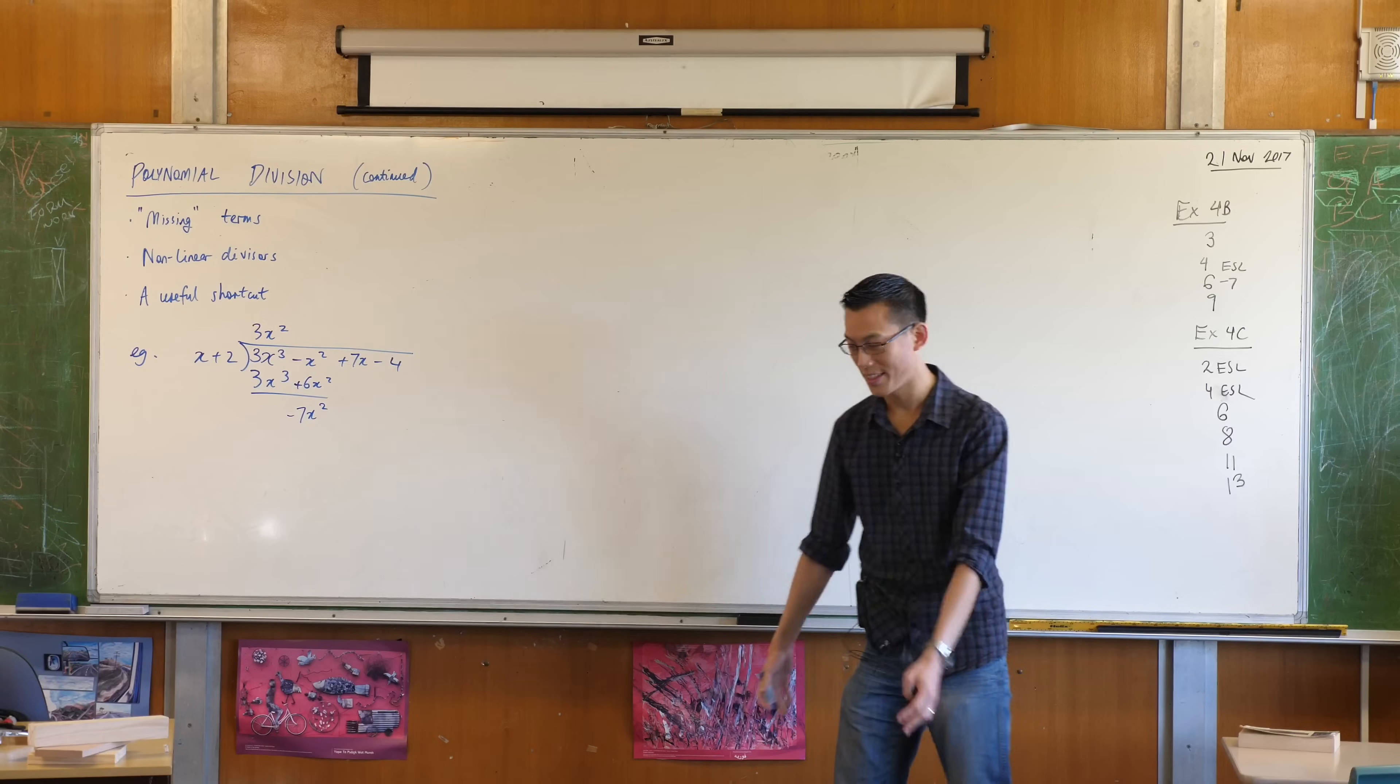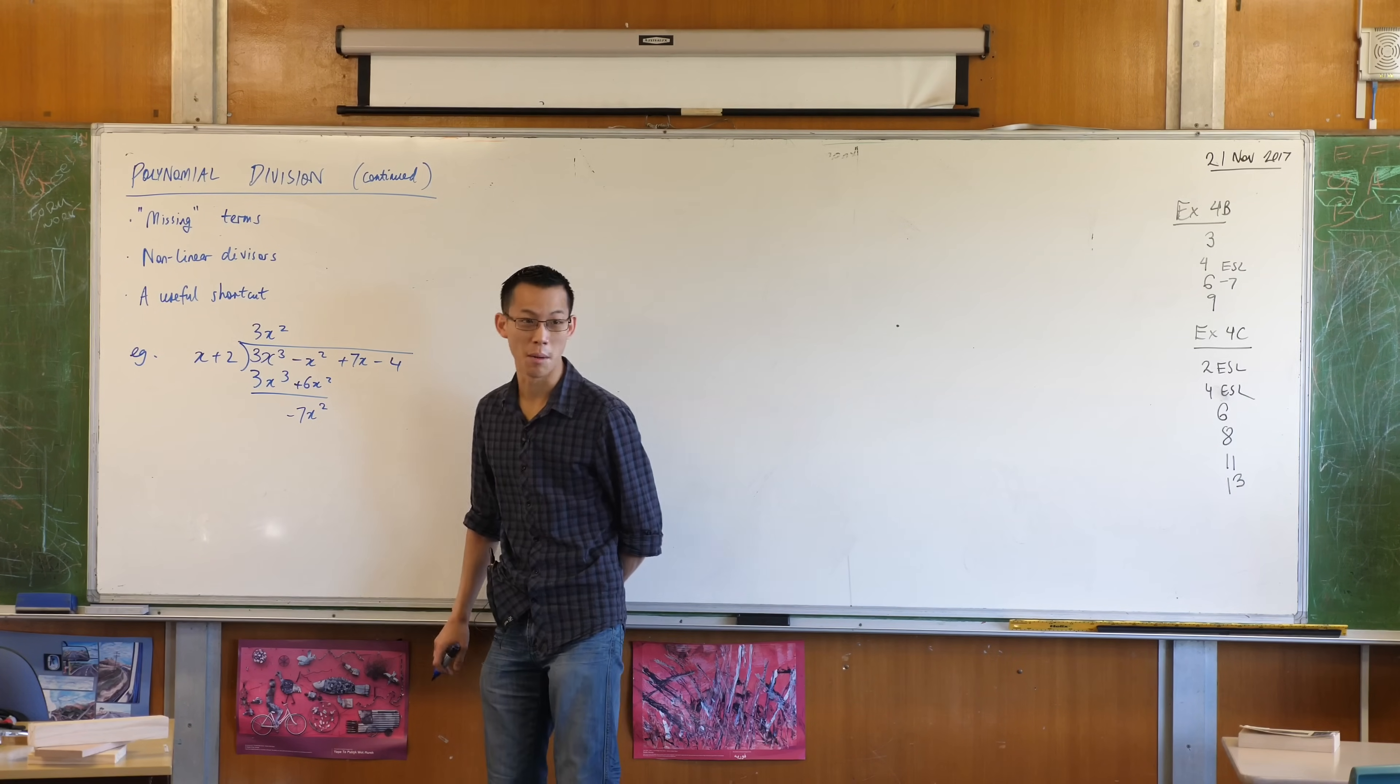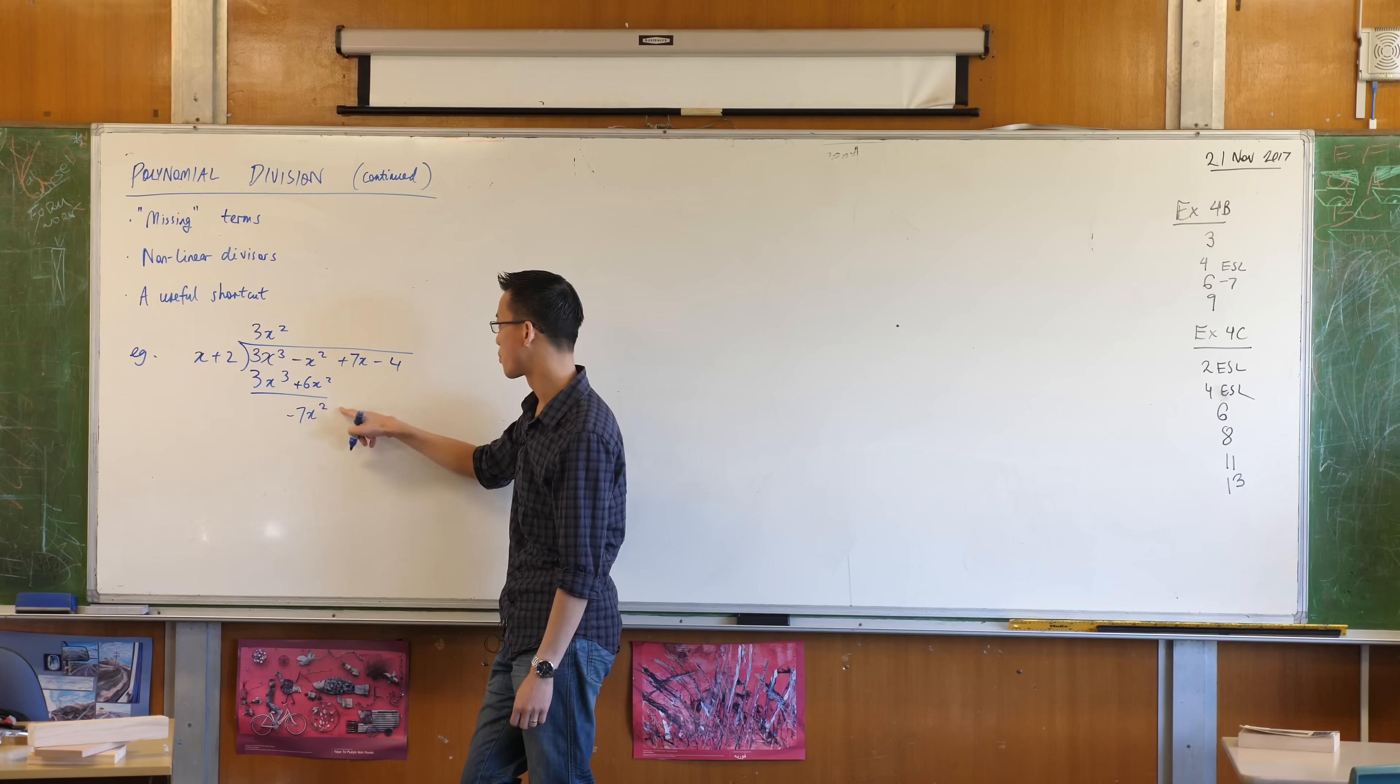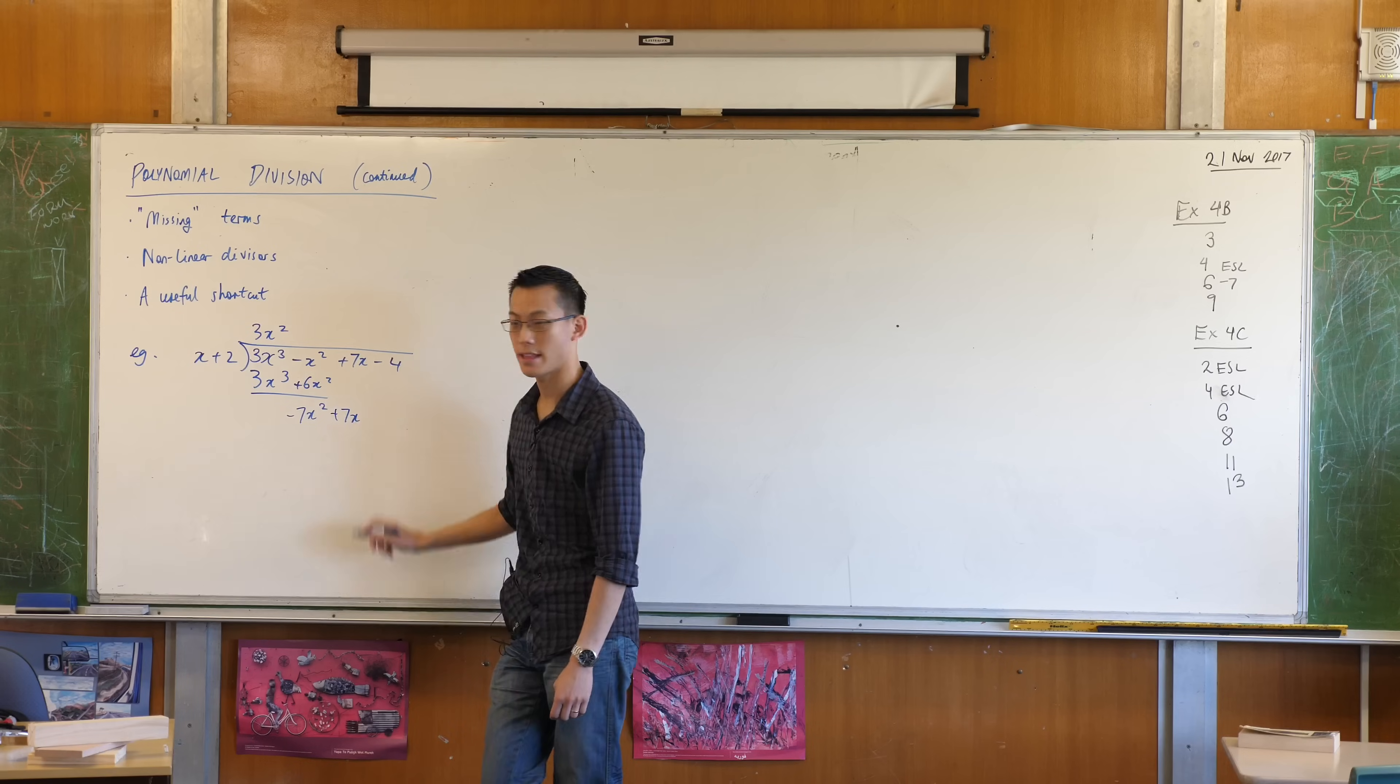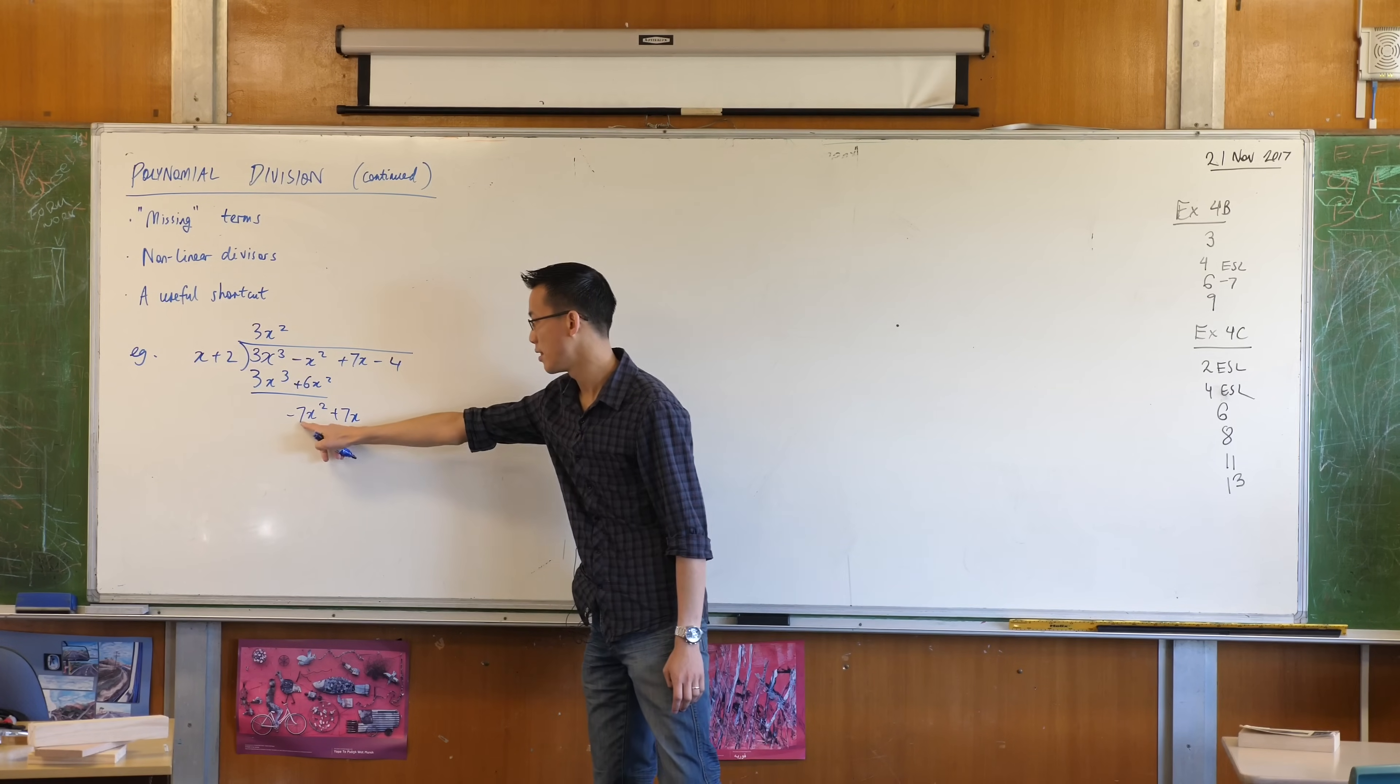Again, one of the tricky things about this being polynomial long division is you get negatives, right? When you're dividing by numbers, there are no negatives to be seen. There's minus 7x squared there. I will bring down this plus 7x, and then I pose the question again.